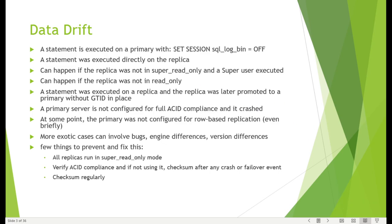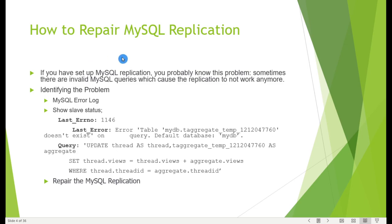How to repair MySQL replication - if you have configured MySQL replication you probably know this problem. Sometimes there are invalid MySQL queries which can cause replication to stop working. We can see here the last error number 1146 caused by some DML update where maybe the record was not available or the table was not there on the replica side. Such errors can be skipped, or you can check with the application team for the next steps.